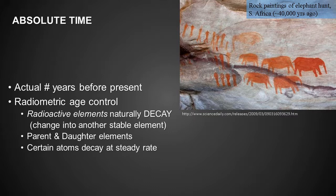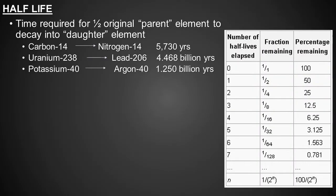For example, all carbon-14 decays at the same rate and all potassium-40 decays at the same rate, but carbon-14 and potassium-40 decay at different rates compared to each other. The decay from parent into daughter isotopes proceeds with what we call a half-life. The half-life is the time required for one half of the parent isotope to decay to the daughter isotope. For example, if we start with 100 parent isotope atoms and we wait until one half-life has passed, we will have 50 parent isotopes left and 50 daughter isotopes.